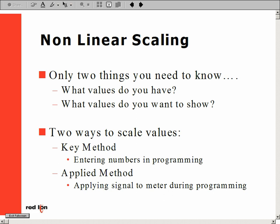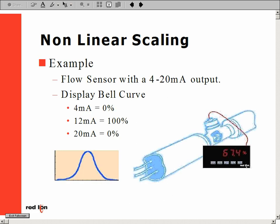The first step is to select the proper scaling method — key or apply. The next step is to key in or apply the low input signal. In our example, that would be 4 milliamps. Next, in step 3, we key in our corresponding display reading for the low point, which is 0.